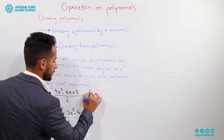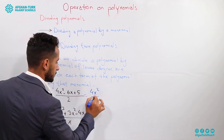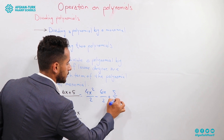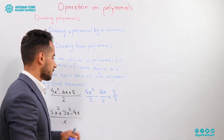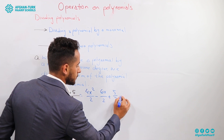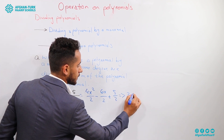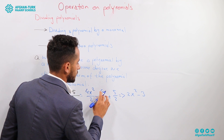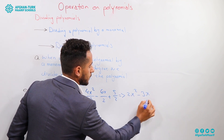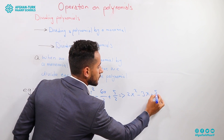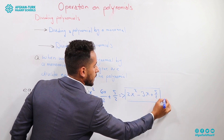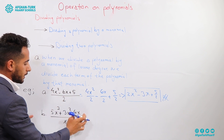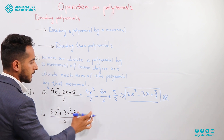For the first example, we have a polynomial in the numerator and a constant term in the denominator. We separately divide each term of the polynomial by the denominator: 4x² over 2, minus 6x over 2, plus 5x over 2. Simplifying: 4 divided by 2 is 2, so we get 2x², minus 3x, plus 5 over 2. That is the answer for this division.